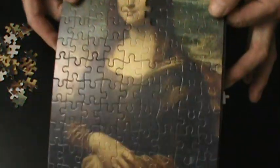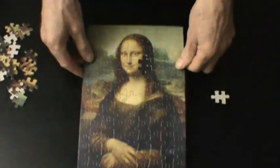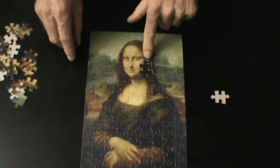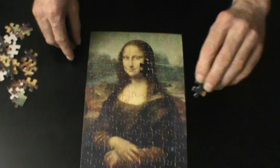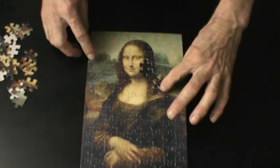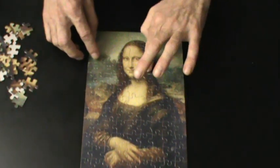It's the Mona Lisa. And you'll notice that there is one piece missing, the exact piece that they selected at random.